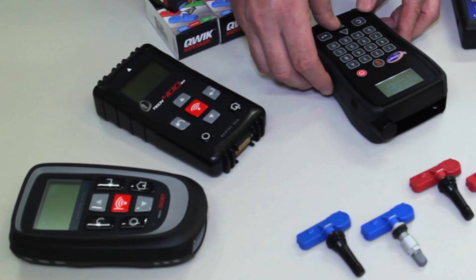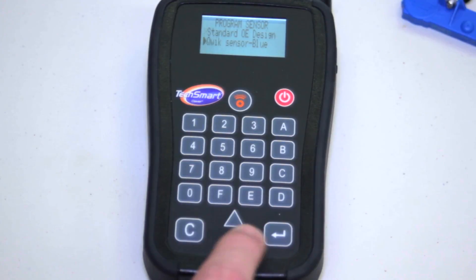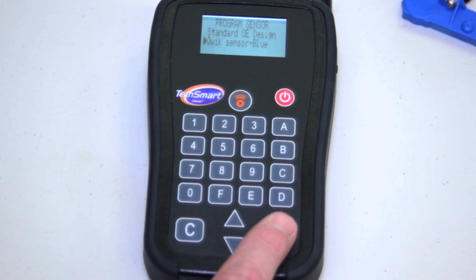It then asks, are you going to do the standard OE design or the quick sensor? And it actually states quick sensor blue, so I know I have the right application.